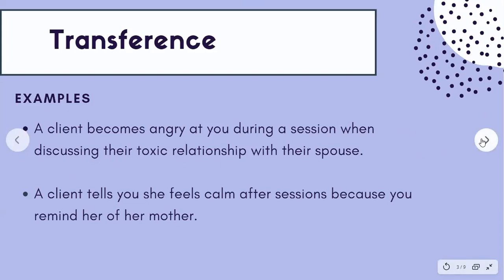So what are some examples of transference? An example might be that a client becomes angry at you during a session when discussing their toxic relationship with their spouse. They are projecting — redirecting those feelings of anger, anxiety, and distress about their relationship onto you. This is very normal and very common, but it is an example of transference.